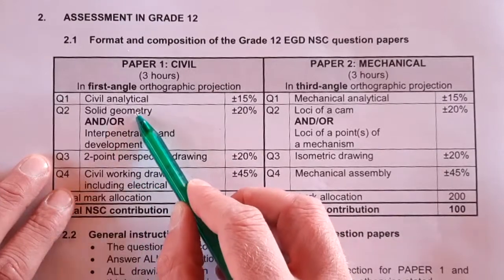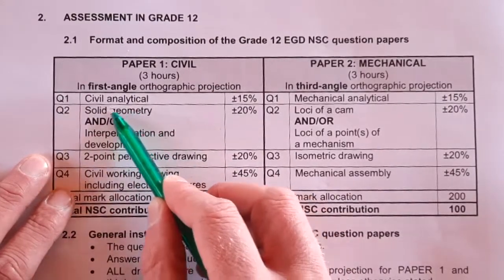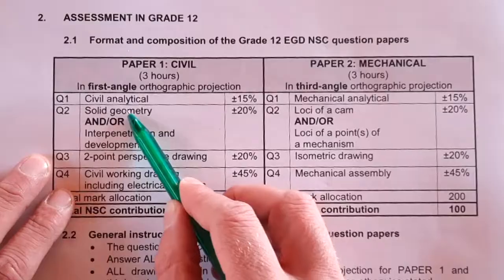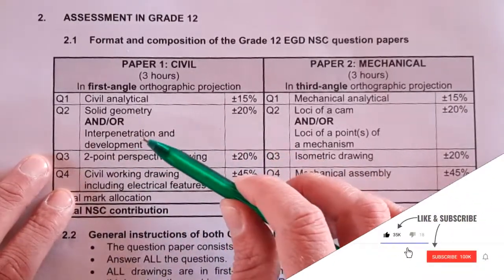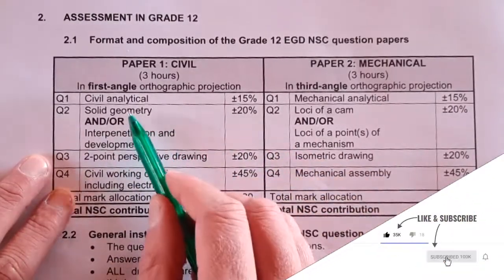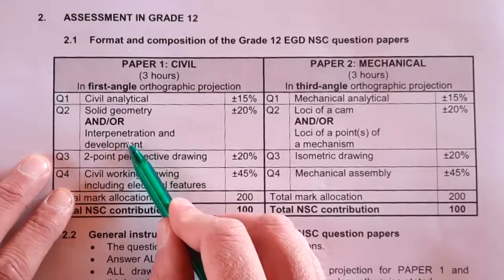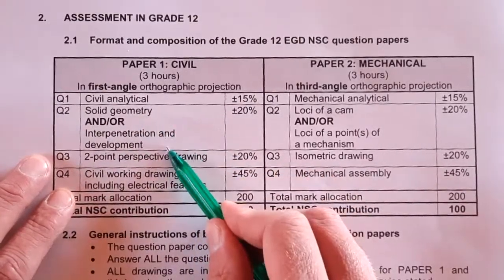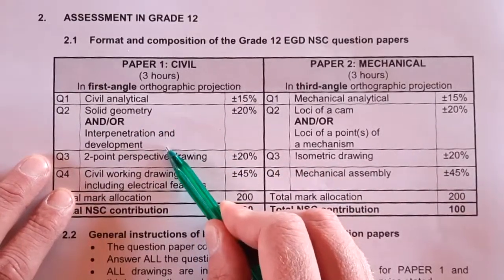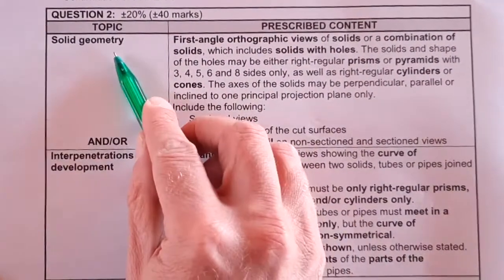It could also be a solid and interpenetration combined — almost a reduced version of both — to get to that 20%. Interestingly, last year they asked solid geometry, and the year before that, 2019, it was interpenetration and development. We look at both of these questions that were asked, as well as the memos, in this video.